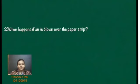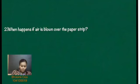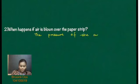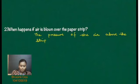The second question: what happens if air is blown over the paper strip? If air is blown over the paper strip, the pressure of the air above the paper strip will get reduced. So the answer is: the pressure of the air above the strip of paper will get reduced.